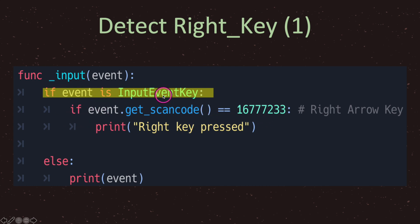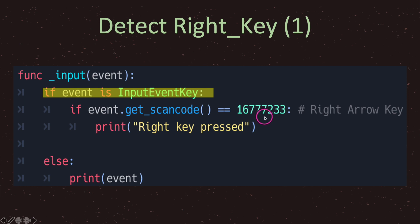Once inside that first if block, event could be Q, W, E, 1, 2, 3, etc. However we only care about one specific key — the right arrow key. So we write a second if statement: if event.get_scan_code() == 16777233, which is the integer value for the right arrow key, we print to screen 'right key pressed.' There is an easier way to handle key inputs and we'll look at that in a later episode.